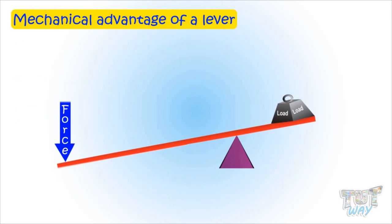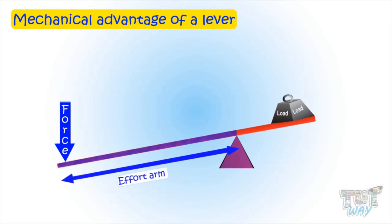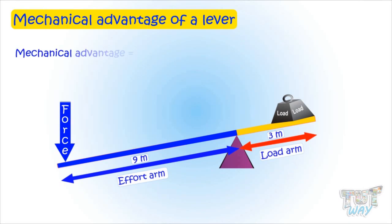Let's take another example. Here, the length of the effort side is 9 meters and the length of the load side is 3 meters. So the mechanical advantage will be 9 divided by 3, that is 3.